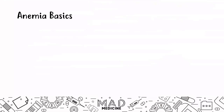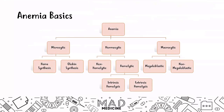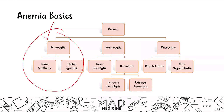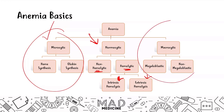When it comes to anemias, we have already covered microcytic. In these lectures, we're going to be discussing normocytic anemias. Normocytic anemias can be subclassified based off of hemolysis and lack thereof hemolysis. Hemolysis can be further broken down into intrinsic and extrinsic hemolysis. In our later videos, we will cover macrocytic anemias too, but for the next upcoming videos we're going to be focusing on normocytic anemias.